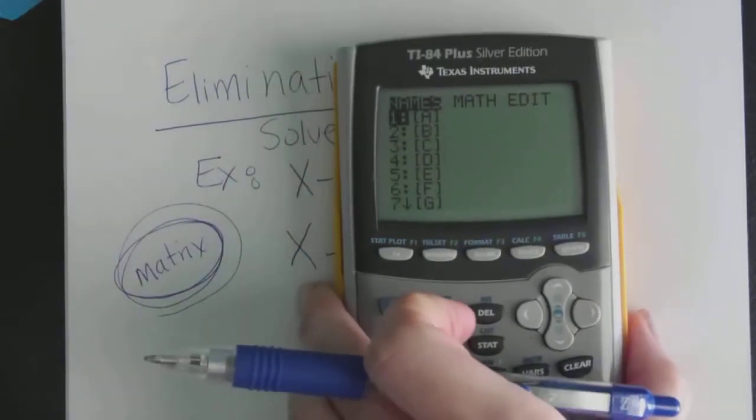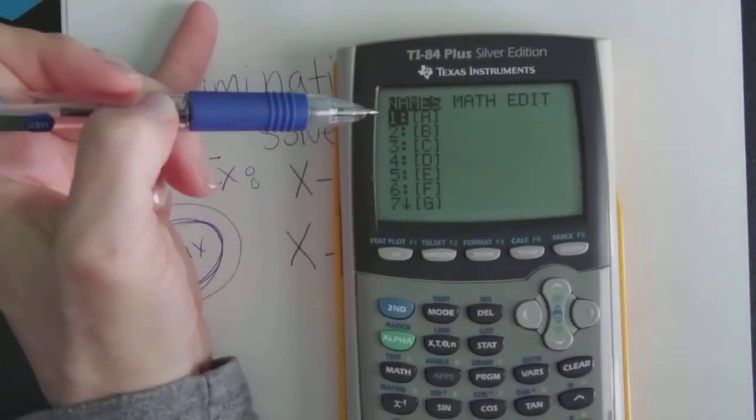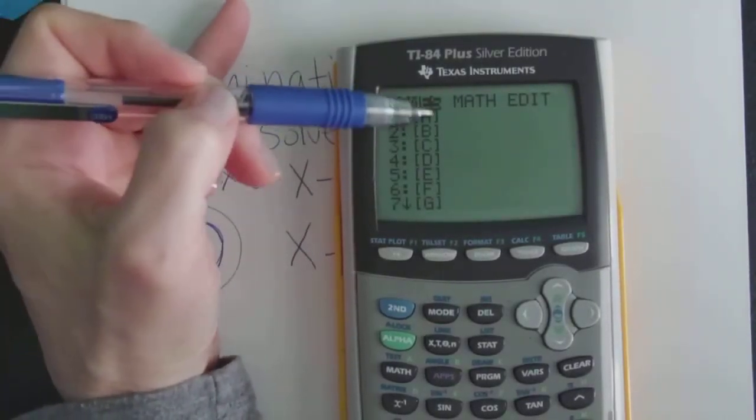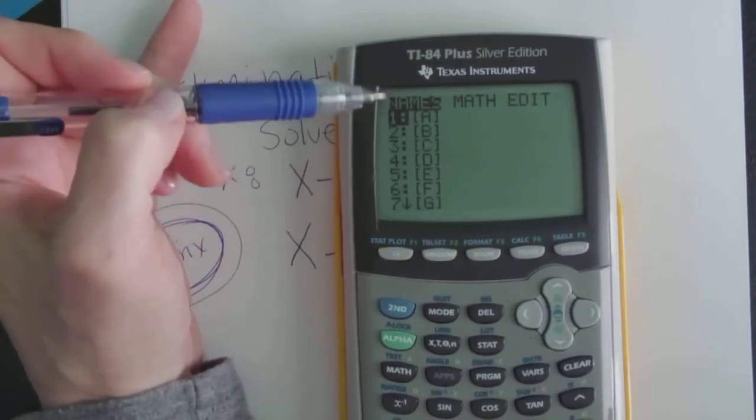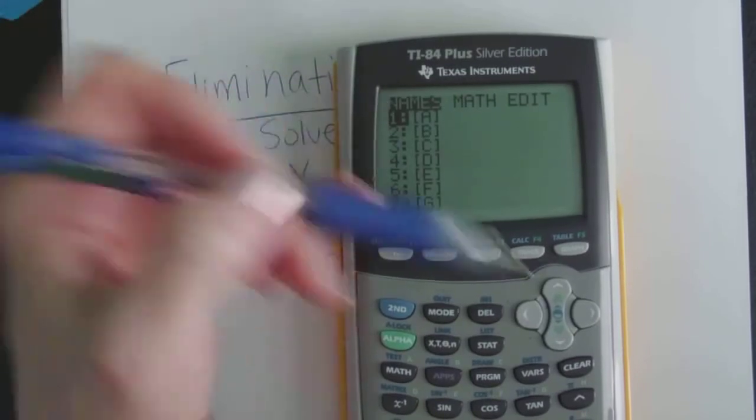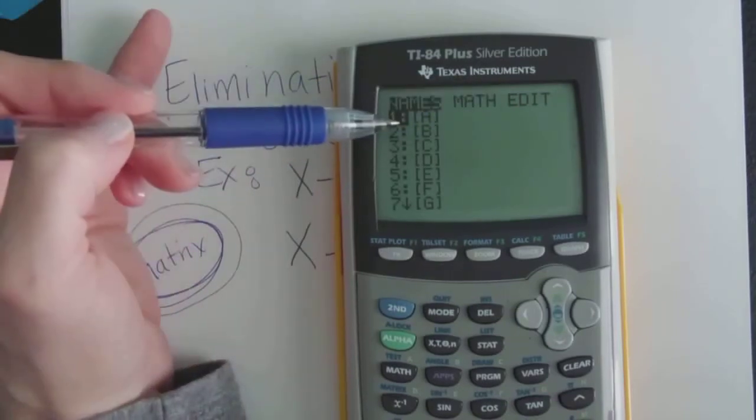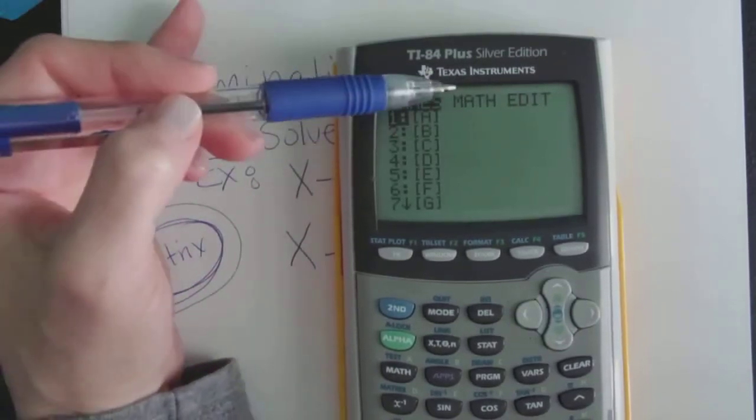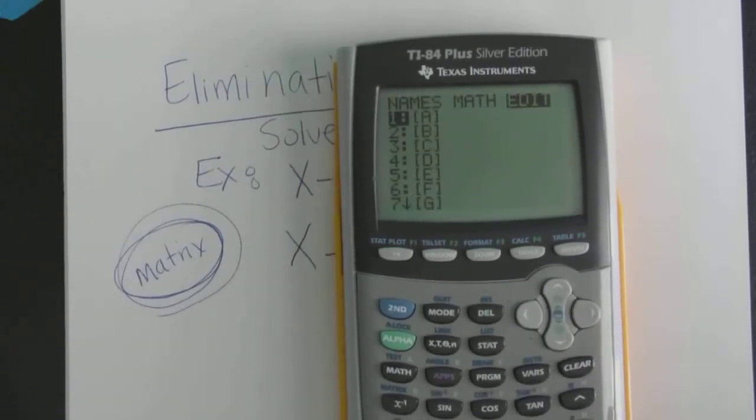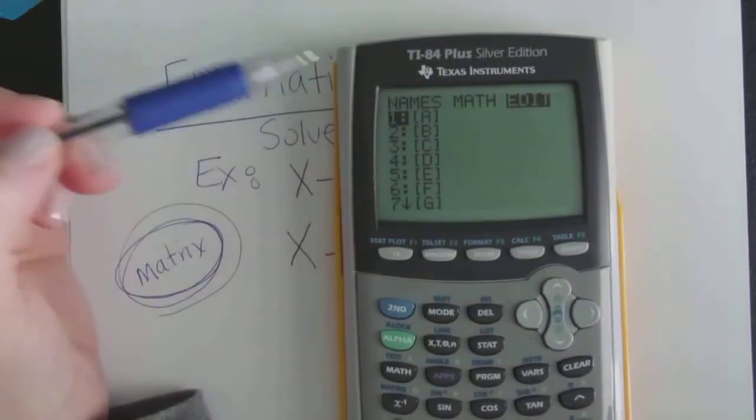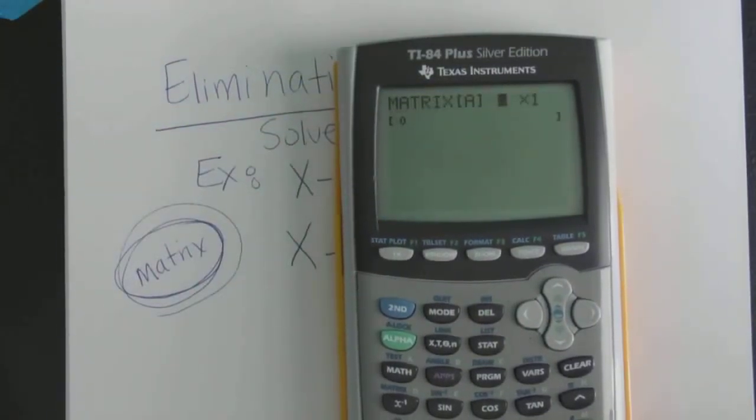This is what's gonna come up. Now for us we will really for this class only ever be using this first matrix which is called matrix A. But in order to solve a system, with every new problem we're always going to have to edit the matrix before we can do anything with it. So we're actually going to arrow to the right two times to edit or put the data into matrix A. So after you're over here at edit go ahead and press enter.